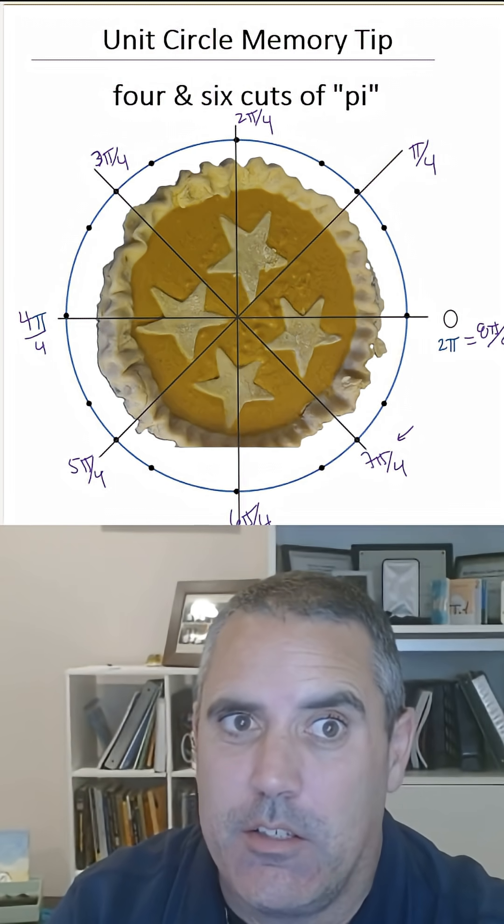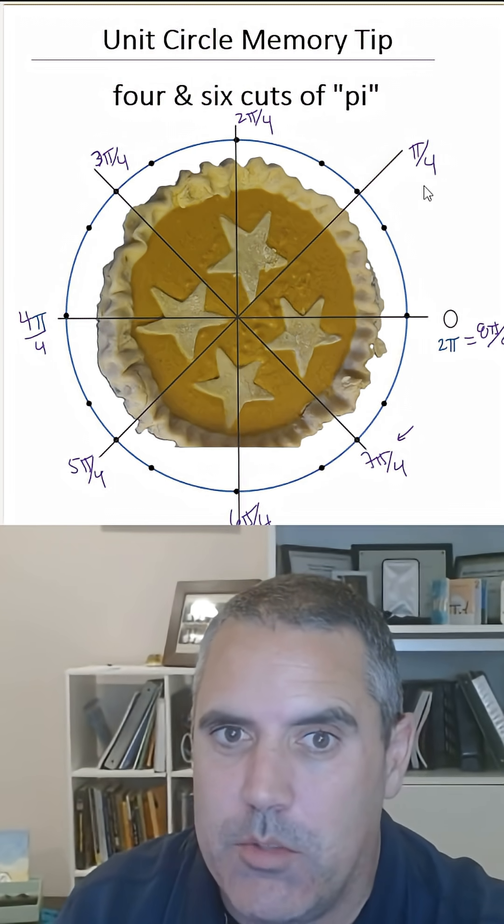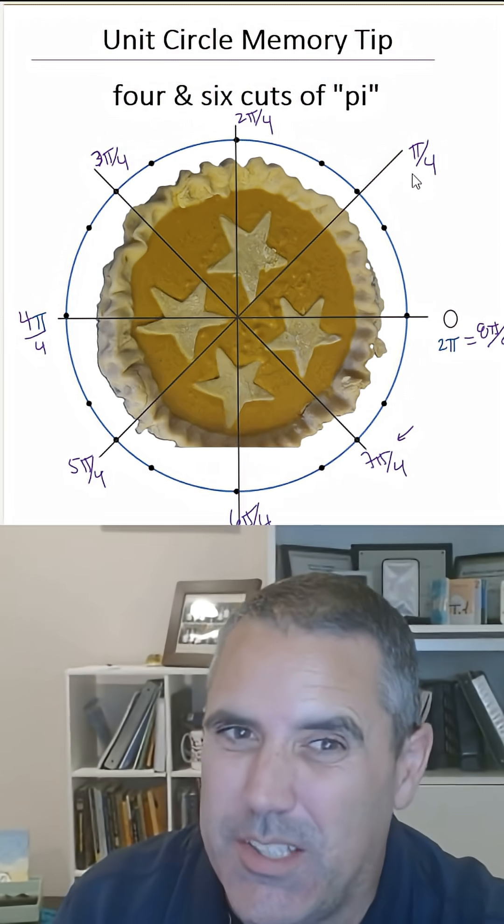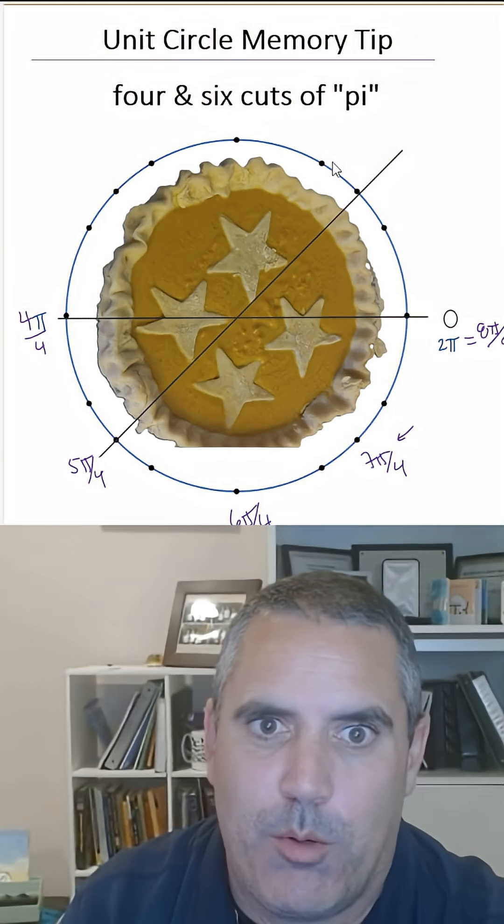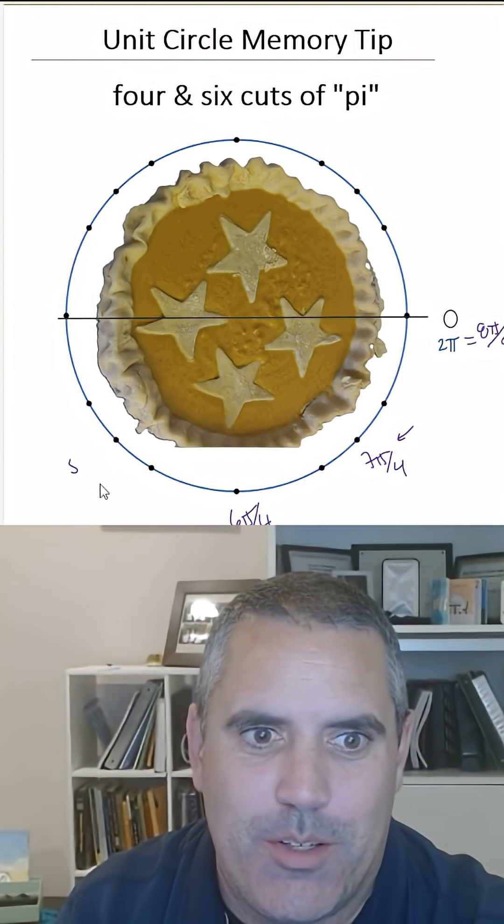I tell students that and they're amazed, but it's something you get. So there you go. Those are the main angles. We also like to cut it into 6. So let's do that next. Let's get rid of this. Let's cut up our pie a little differently. We've got more people that want to eat it.